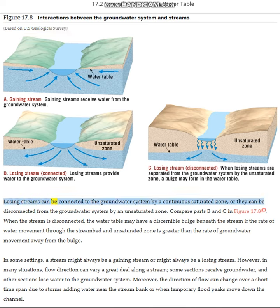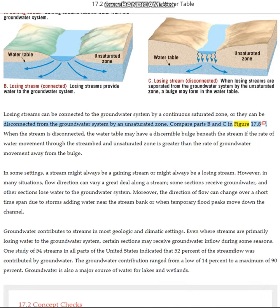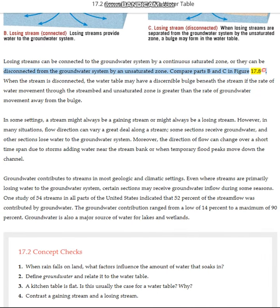Losing streams can be connected to the groundwater system by a continuous saturated zone, or they can be disconnected from the groundwater system by an unsaturated zone. Compare parts B and C in Figure 17.8.